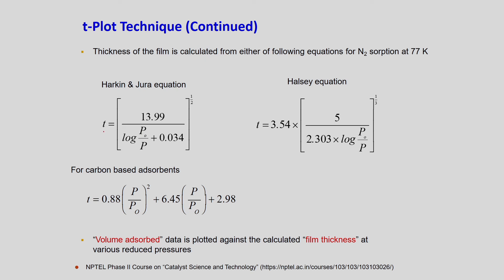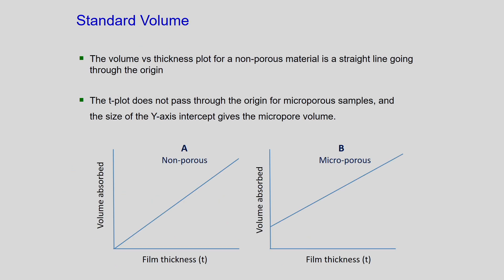For accessing statistical thickness, expressions available include the Harkins and Jura equation, the Halsey equation, and a correlation for carbon-based adsorbents. The volume adsorbed data from the BET instrument is plotted against film thickness rather than partial pressure, using these expressions. For a non-porous material, the volume versus thickness plot is a straight line through the origin.